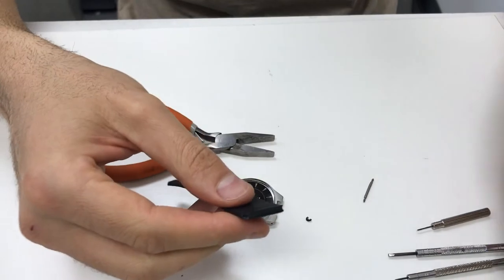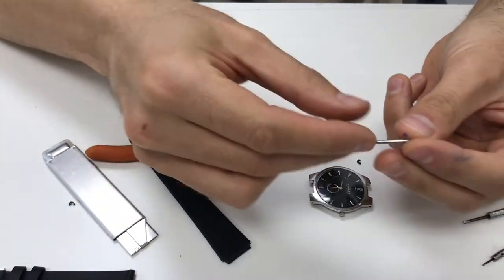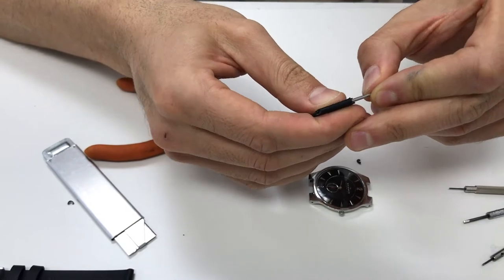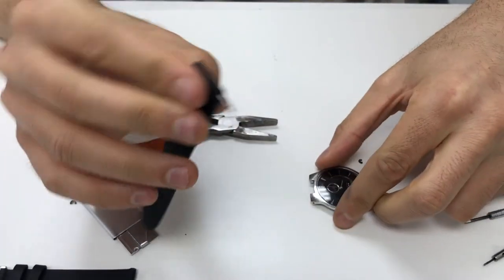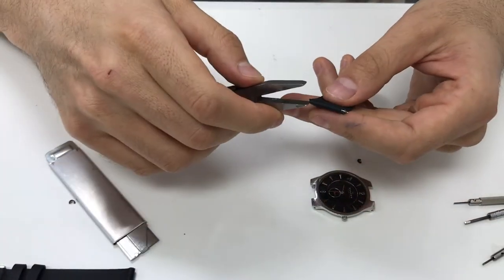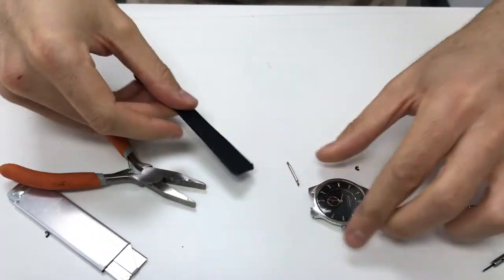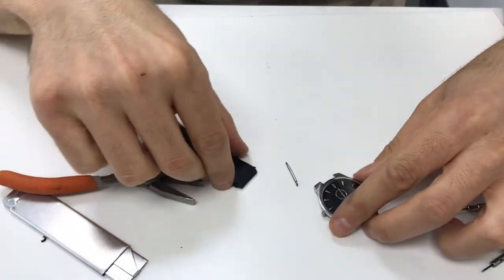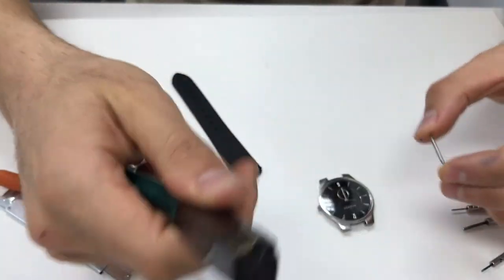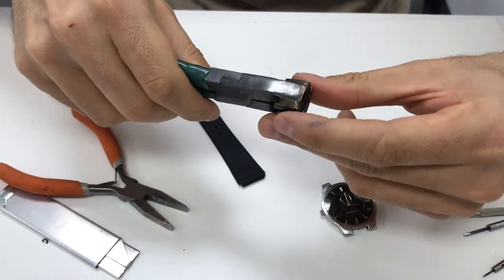Now once this is flat I'm going to grab my spring bar pins which are right here. I'm going to try to go ahead and insert the spring bar pin into the hole here. Now sometimes you'll need to curve the spring bar pin which is what I'm going to do right here. This tool here will actually curve the spring bar pin.